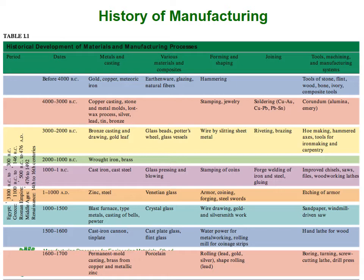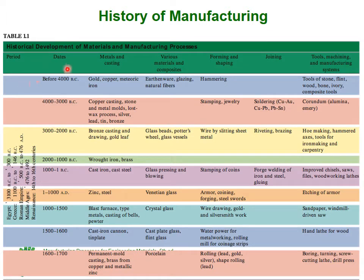I cannot show the whole table in one slide, so I have broken it into two slides. The first column is the time period in human history with approximate dates. The headings are: metals and casting, various materials and composites, forming and shaping operations, joining operations, tools, machining, and manufacturing systems. The periods covered include the Egyptian period, Greek period, Roman Empire, Middle Ages, and the Renaissance — roughly the 14th to 16th centuries.